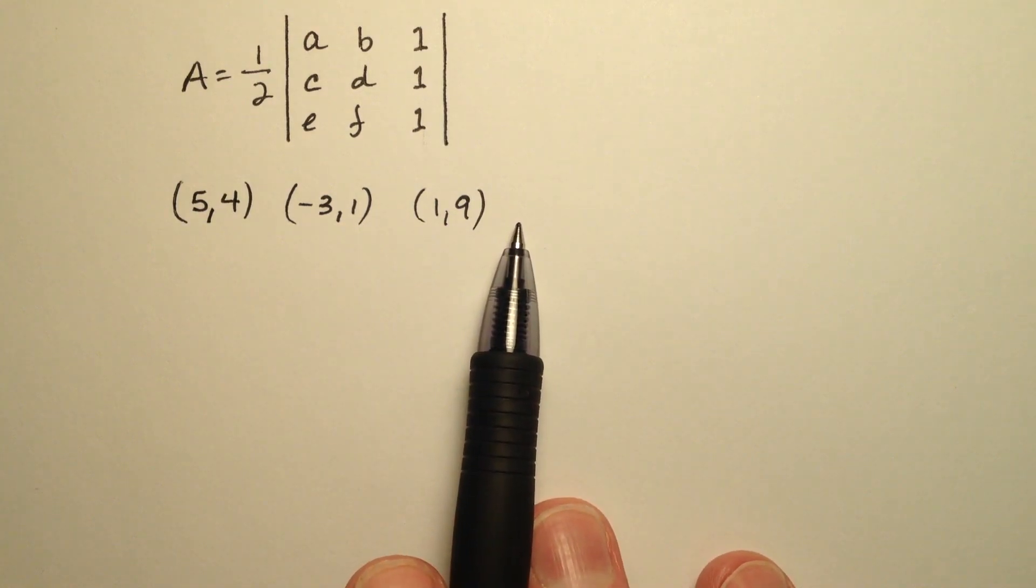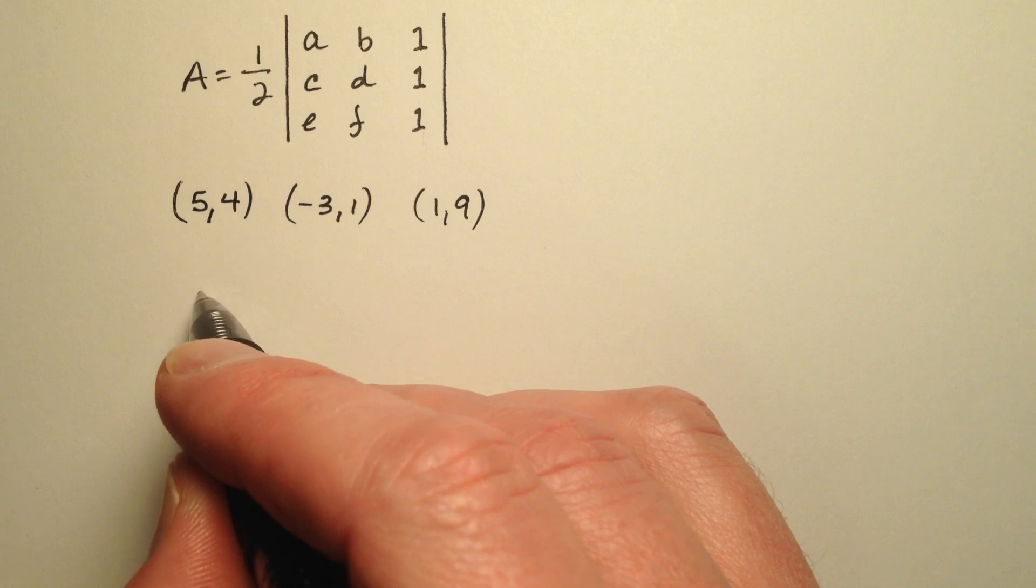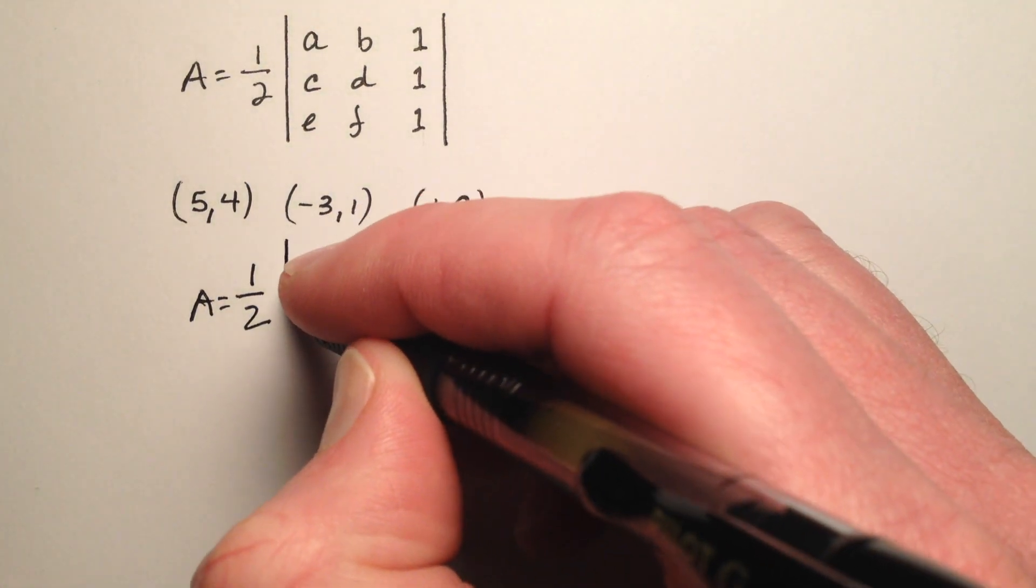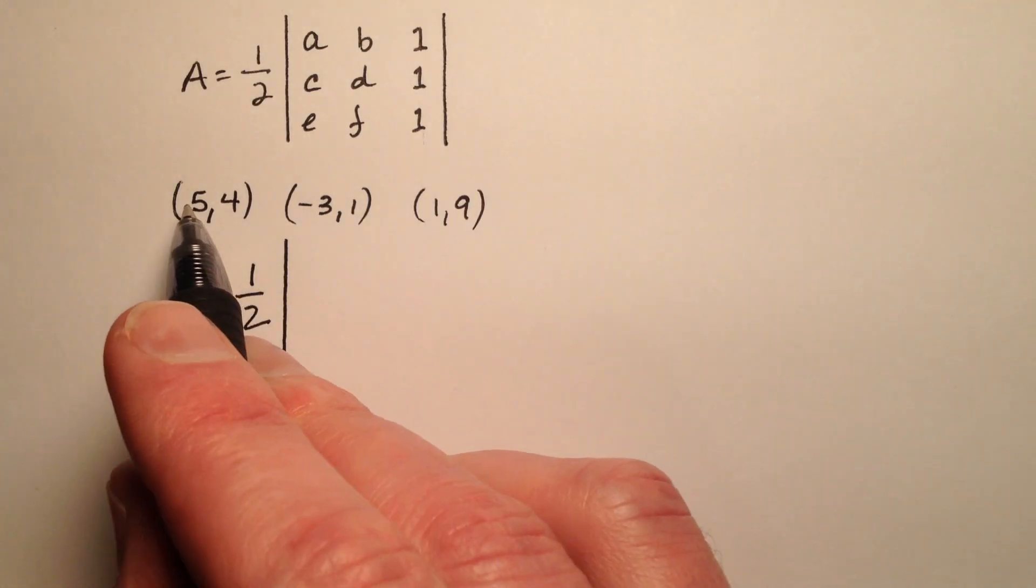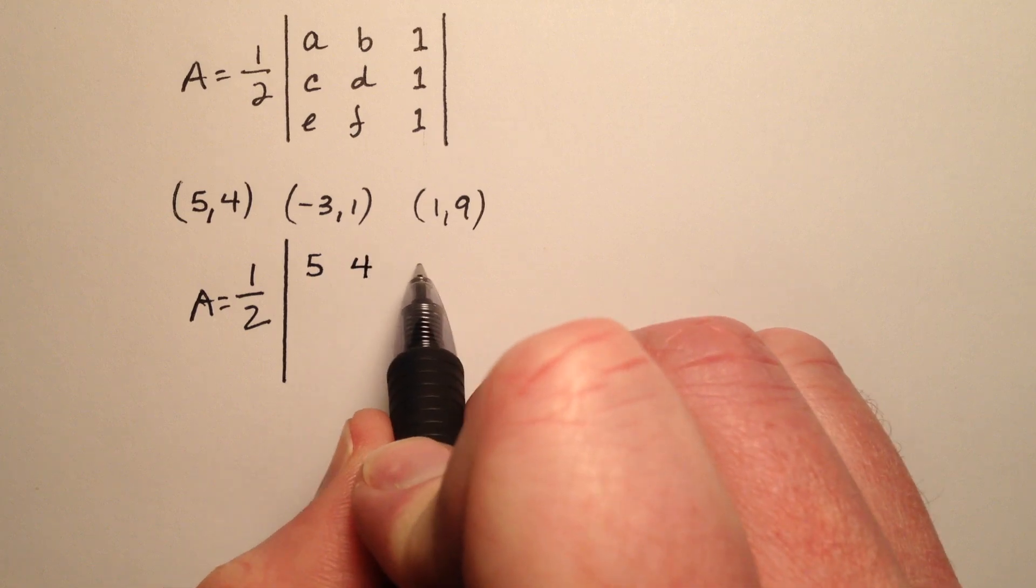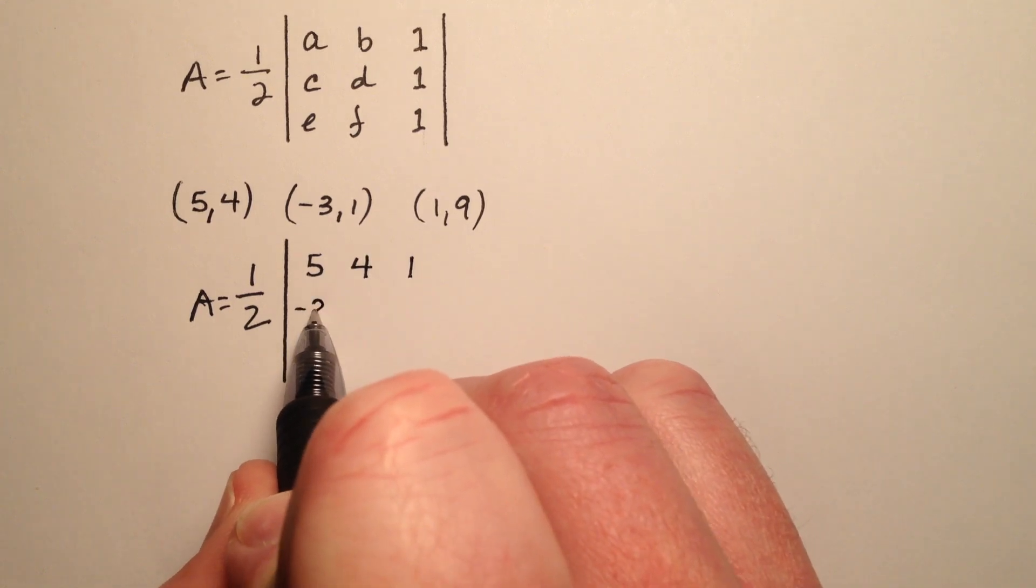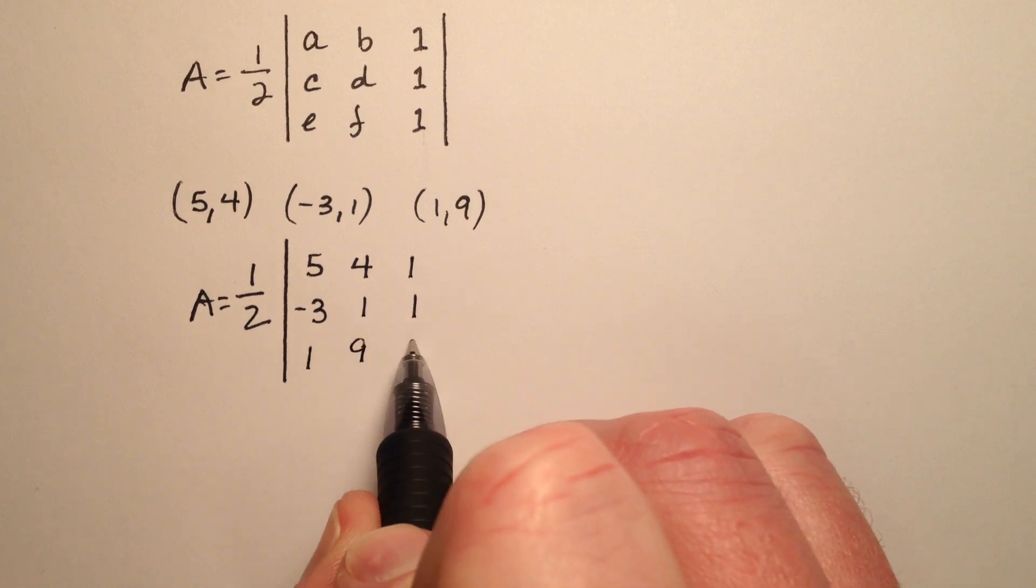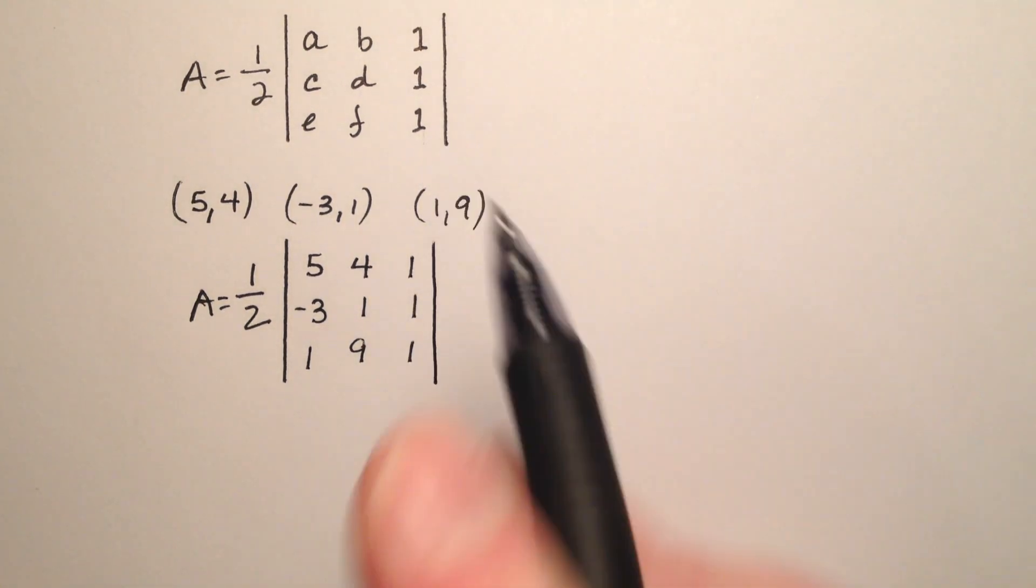So first of all, I'm going to set up my formula. I know that the area equals 1/2, and it's going to be the absolute value of the determinant. So I'm just going to go ahead and put my ordered pairs in here: 5, 4, and then I put a 1 on the end; -3, 1, and my 1 on the end; and then 1, 9 with a 1 there on the end.